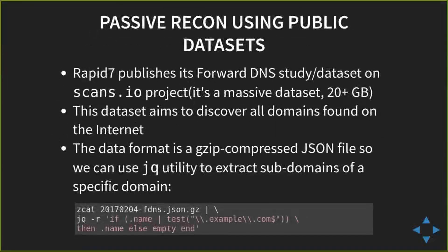Rapid7 publishes its forward DNS datasets on scans.io. The aim is to have all domains found on the internet — it's a massive dataset, 20-plus GB of text, in gzip-compressed JSON format. Using a simple command, you just replace it with your target domain and find subdomains in the 20 GB file. At first I thought it was like finding a needle in a haystack, but when I did it for a bunch of domains, it was interesting and effective.